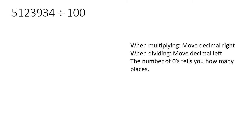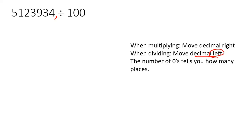Here's our first example. We are going to divide, so we move the decimal left. Now, many learners say: Kevin, there's no decimal here — what are we supposed to do? When you cannot see a decimal, it's actually hiding at the back. Any number that doesn't have a decimal, you can imagine it's at the back. So we are dividing, and we're going to move the decimal left. There are two zeros, so we move the decimal two places back.